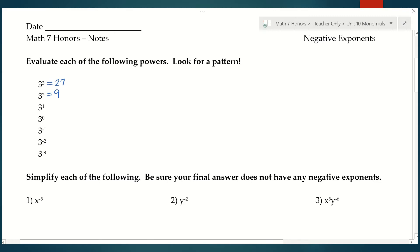3 to the first is just 3, and 3 to the 0 — we remember anything to the 0 power equals 1. So looking at the numbers 27, 9, 3, 1, I want you to look for a pattern. How am I getting from 27 to 9 to 3 to 1? Each time I am dividing by 3.